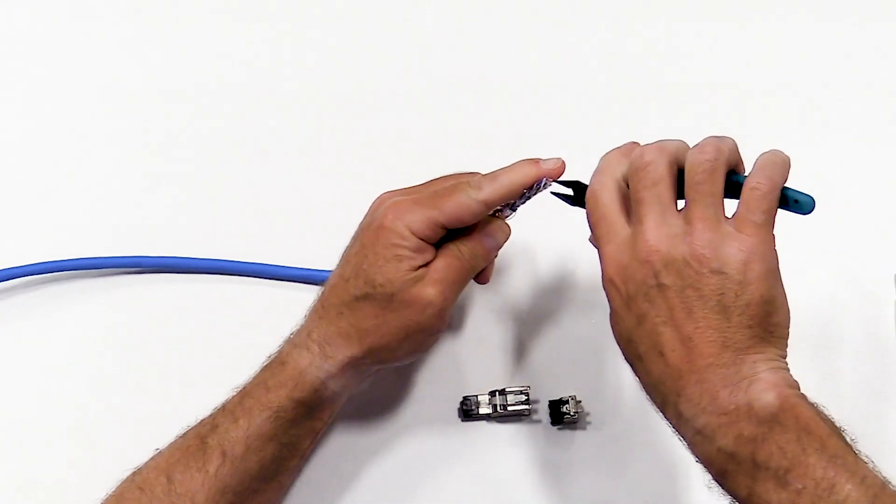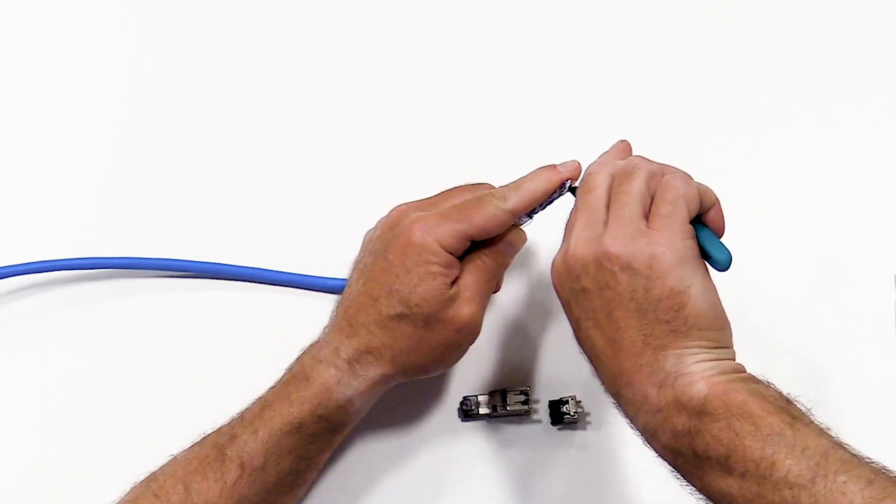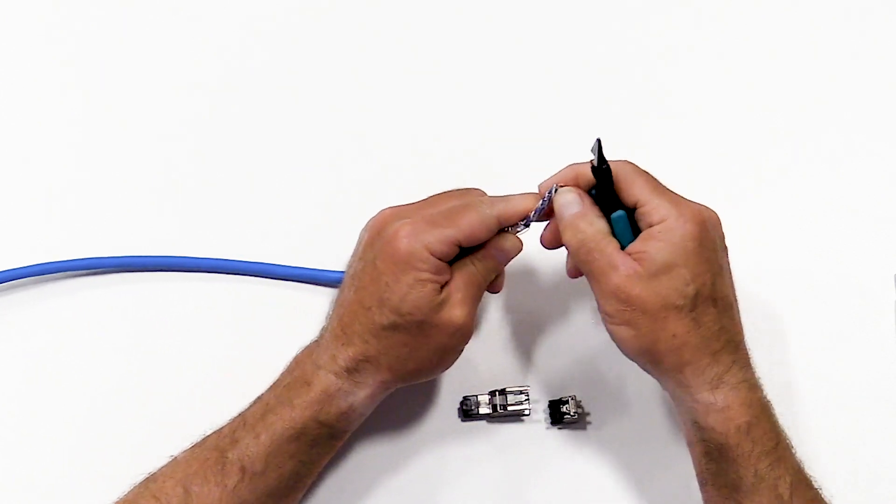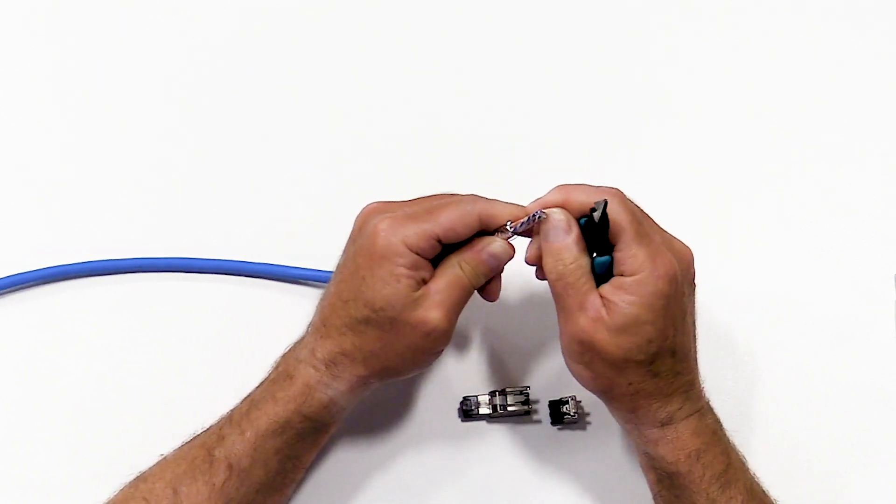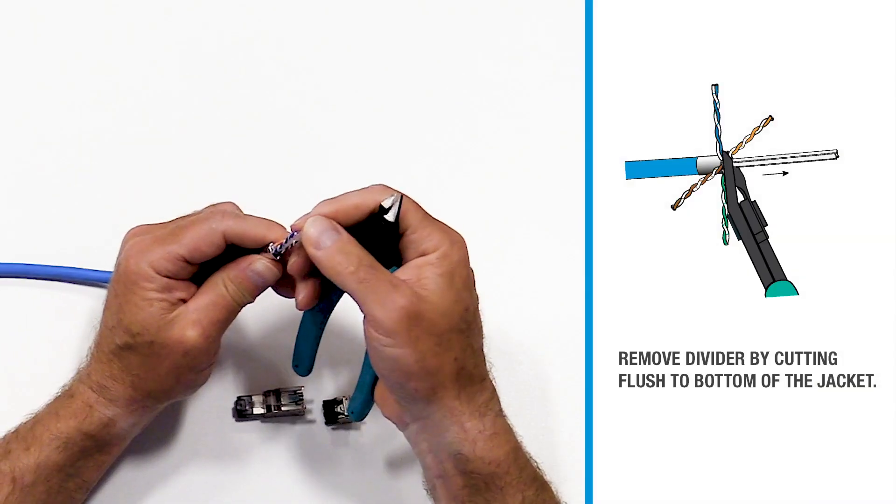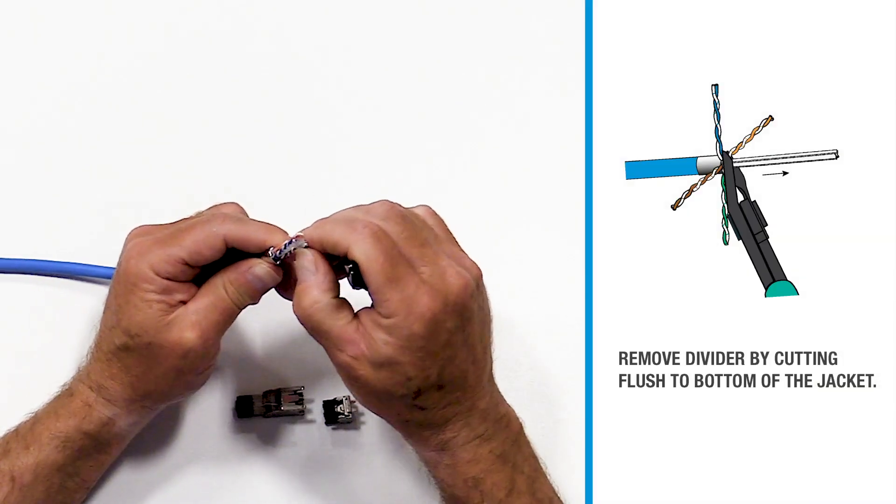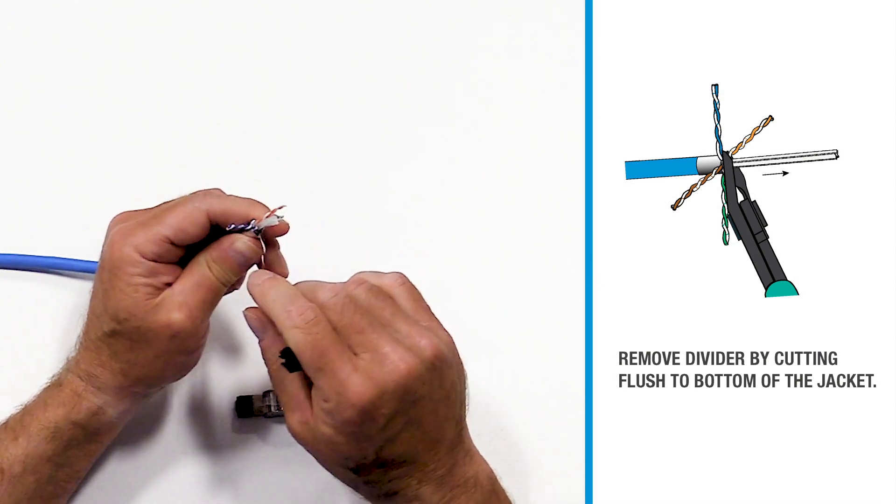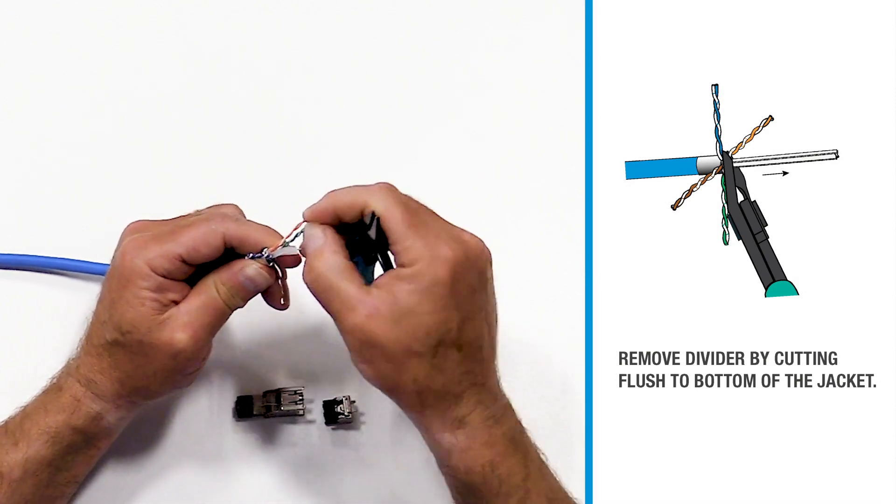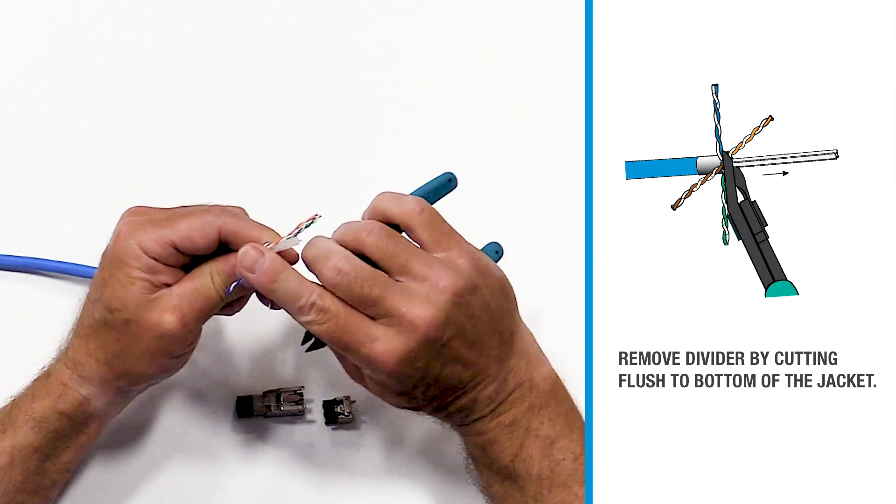Remove any excess filler. If there's a divider inside, it must be removed. Cut it flush down to the bottom of the jacket.